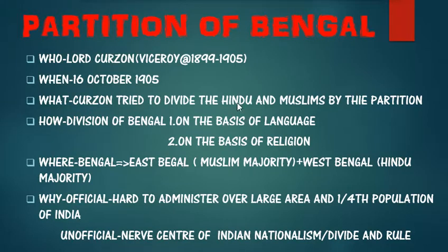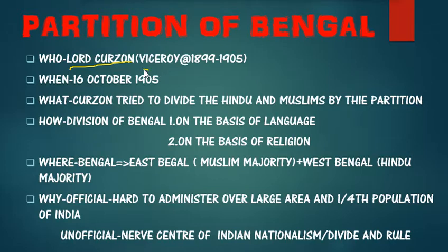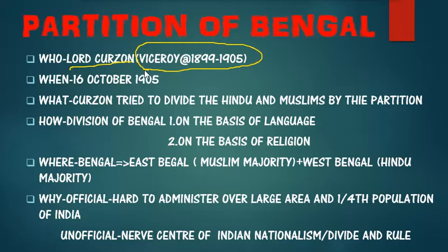Using the 5W plus 1H technique on the topic of partition of Bengal from modern Indian history — who did this partition of Bengal? The answer is Lord Curzon. Who was Lord Curzon? He was the Viceroy of India from 1899 to 1905. You need to remember this.